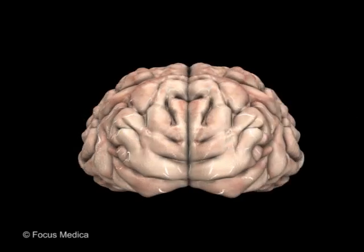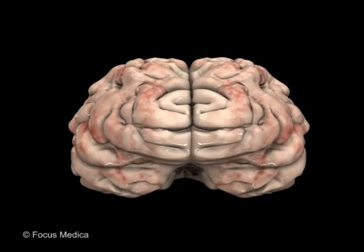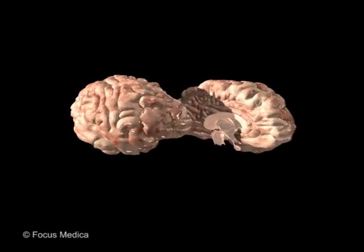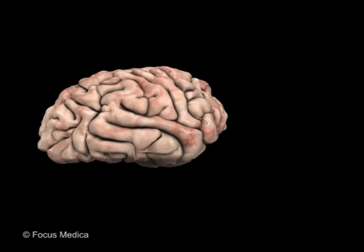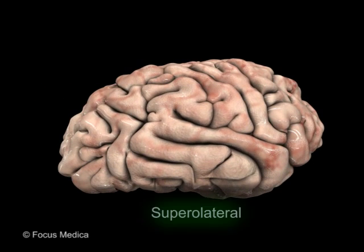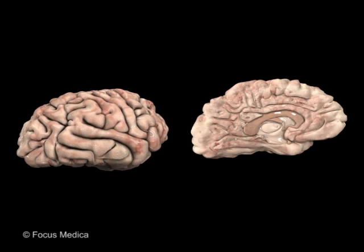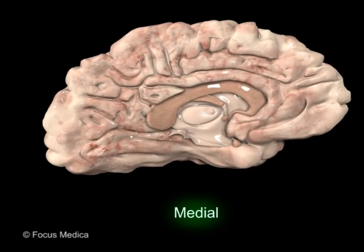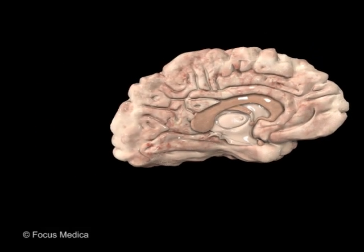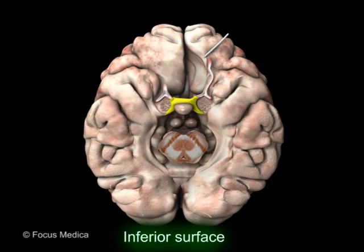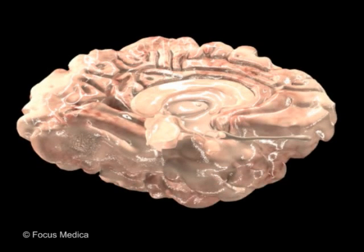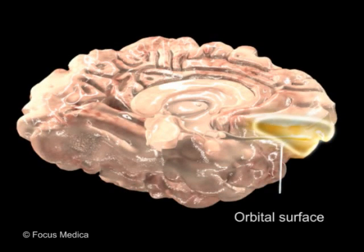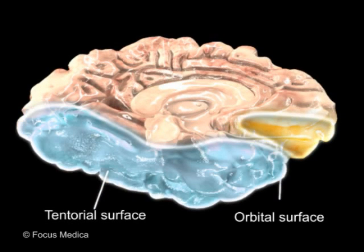The cerebrum, the largest part of the brain, can be studied in two parts: exterior and interior. The exterior of the cerebrum presents a suprolateral, medial, and inferior surface. The rhinal sulcus is lateral to the uncus. The inferior surface is divided into an orbital and tentorial surface.